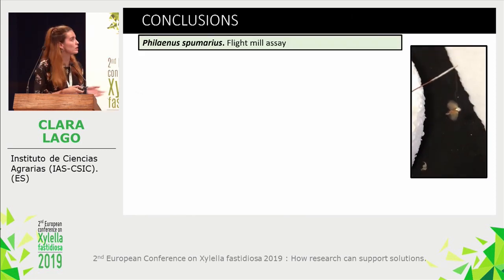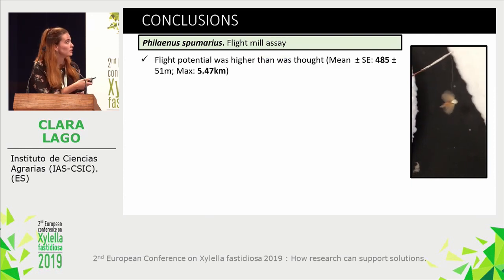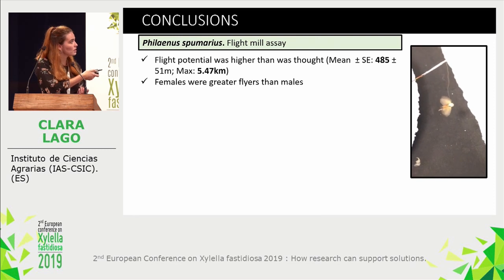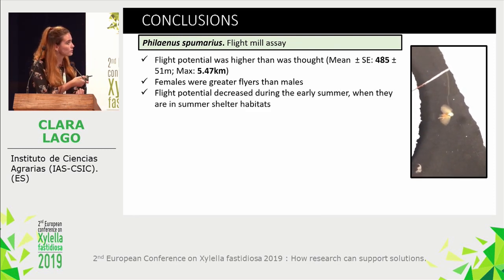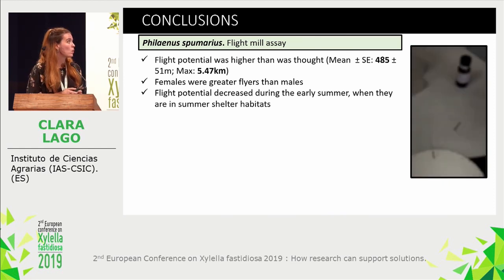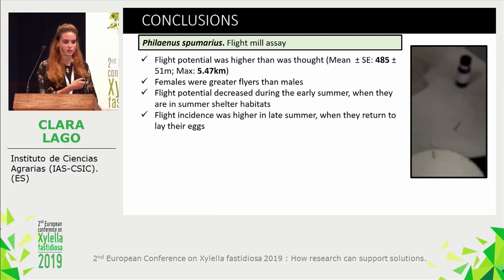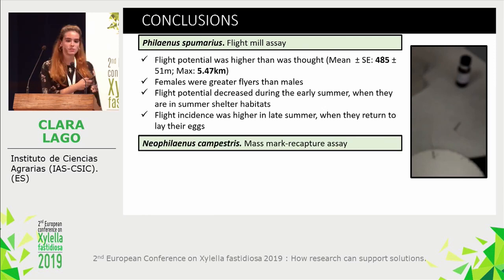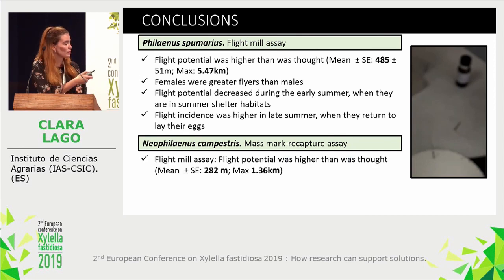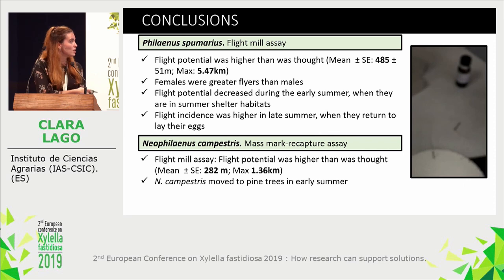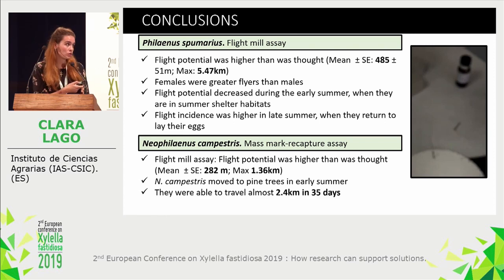To summarize: in the flight mill assay with Philaenus spumarius, we observed that the flight potential was higher than previously thought. Females were greater fliers than males. Flight potential decreases during early summer when they are in summer aestivation habitats. Flight incidence is higher during late summer when they return to crops to lay eggs. In the mark-recapture assay with Neophilaenus campestris, we also observed that the flight potential was higher than previously thought, that they moved to pine trees during early summer, and that they were able to travel much more than expected — almost 2.4 kilometers in 35 days.